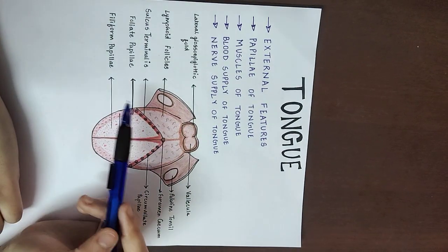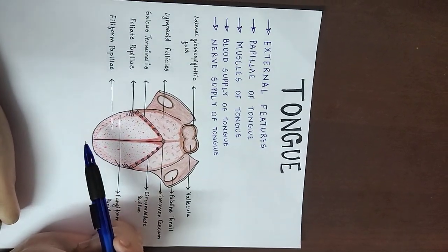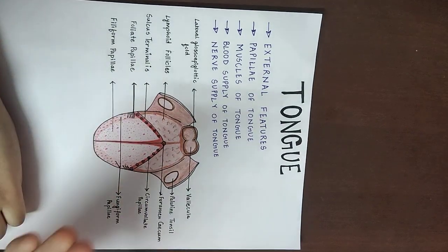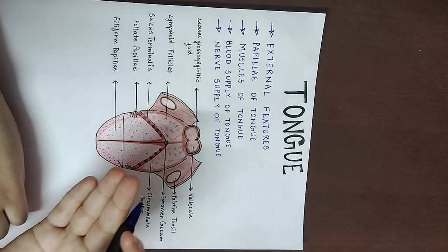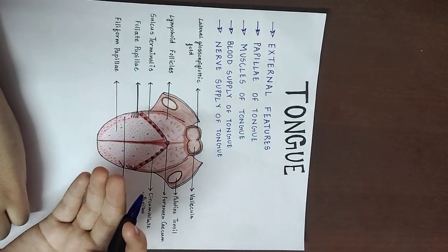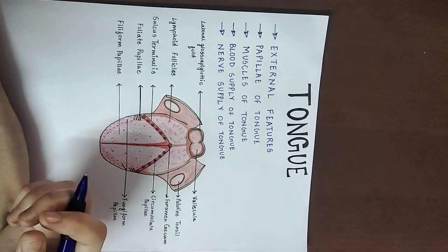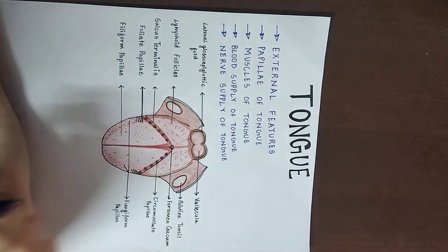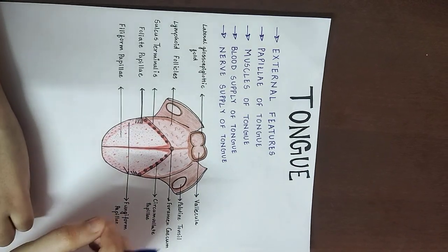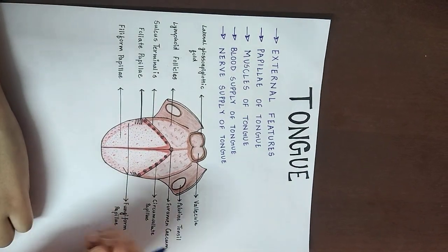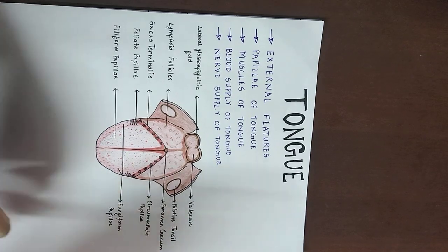Then there is the inferior surface, which is surrounded by and covered with a mucous membrane. In the inferior surface, there is also a fold of mucous membrane which we call the frenulum, which we can easily feel with our tongue.